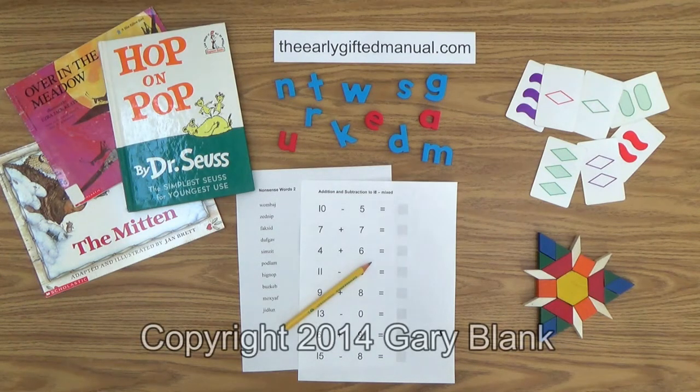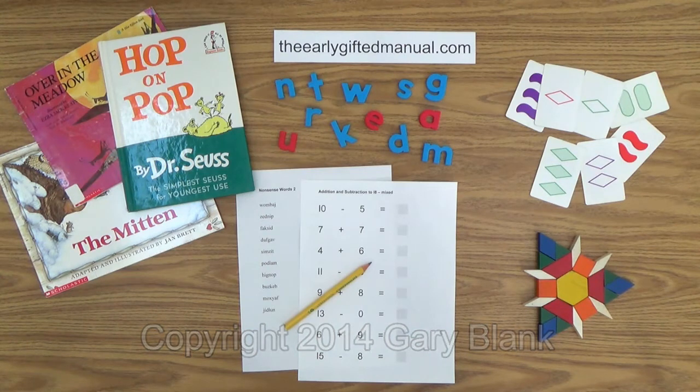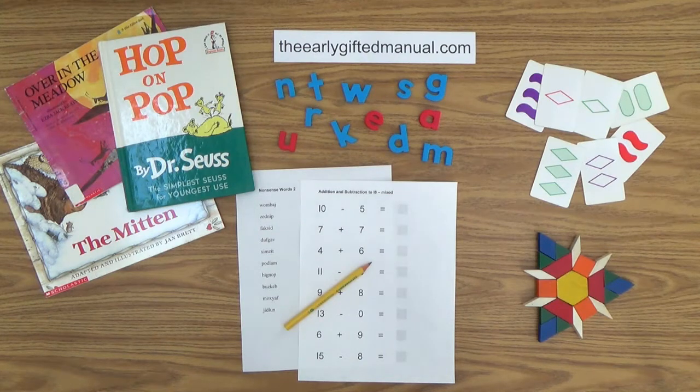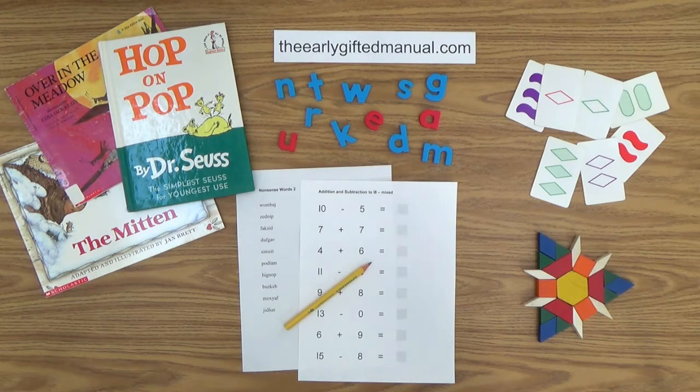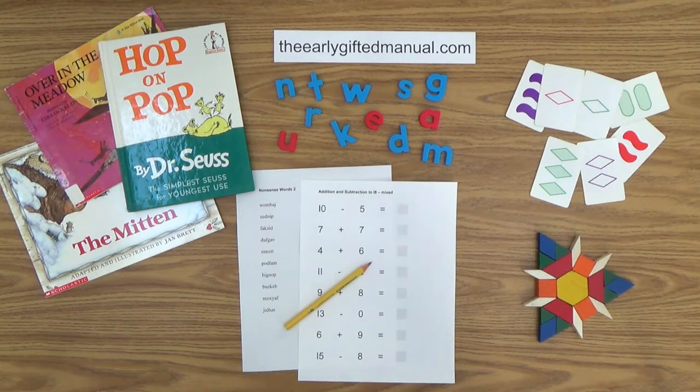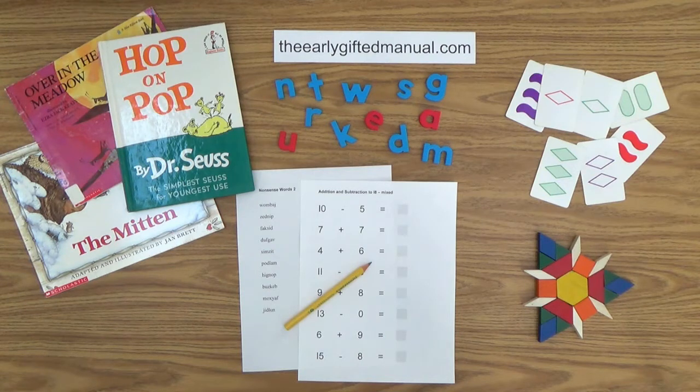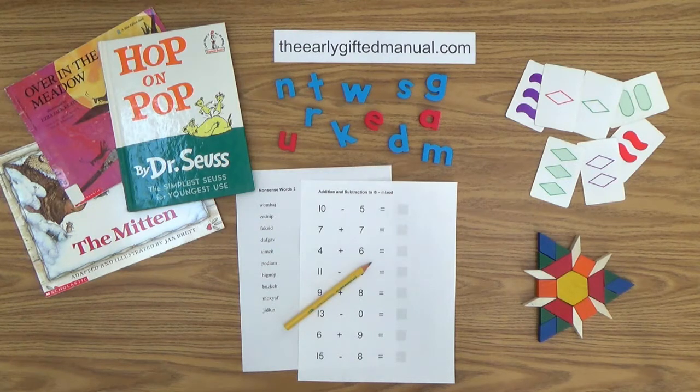Welcome to another parent-teacher video lesson from theearlygiftedmanual.com, a free website for homeschooled children three to seven years old and their parents that promotes and develops giftedness at an early age. I am Gary Blank, the creator of that site and your host and facilitator for this video and all of the videos in my educational program. As the video lessons are designed to work in conjunction with the program on my website, I ask you to, at some point, click on the URL link in the description box below and this action will take you to theearlygiftedmanual.com. By doing that, you will be able to put this lesson and all of the video lessons here on my channel in the proper context of the total program that I am presenting to you and your child.